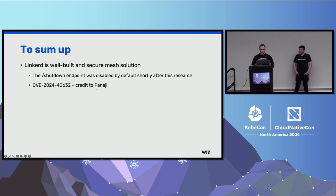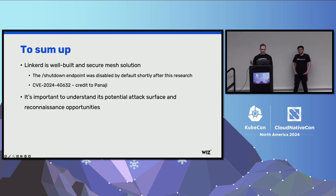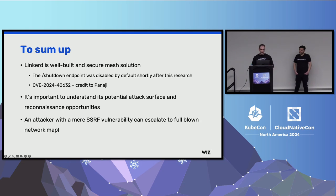To sum up Linkerd: we think Linkerd is a very well-built and very secure mesh solution, and we can see them striving towards mitigating attacks like this — for example, the shutdown endpoint was disabled shortly after this research. But even with production-level solutions, before introducing any solution into a Kubernetes environment, it's important to understand its potential attack surface and reconnaissance opportunities. As you've seen in this case, an attacker with a mere SSRF vulnerability can escalate to a full-blown network map. And with that, I want to invite my colleague Eli to walk you through how we hacked SAP AI.